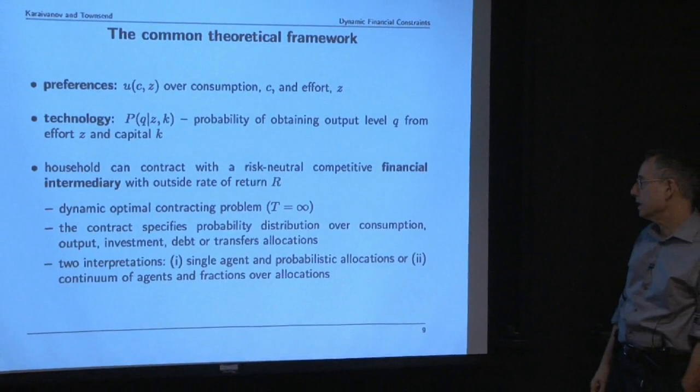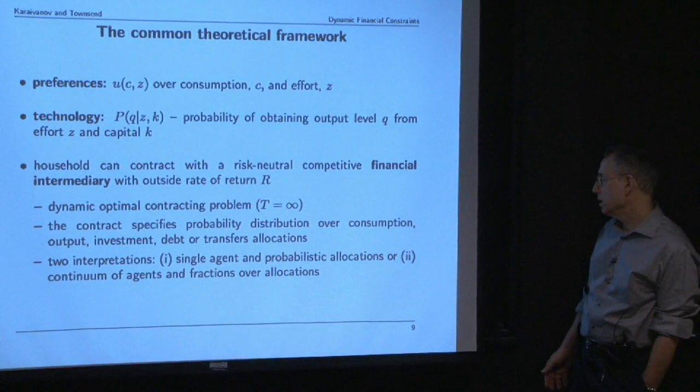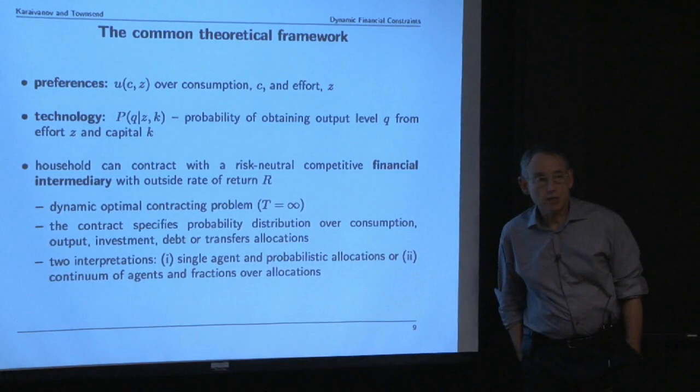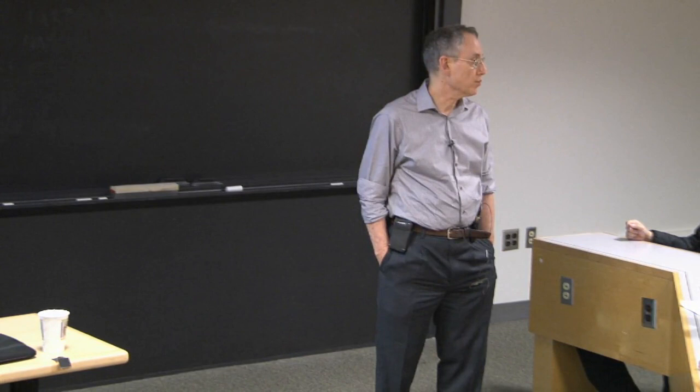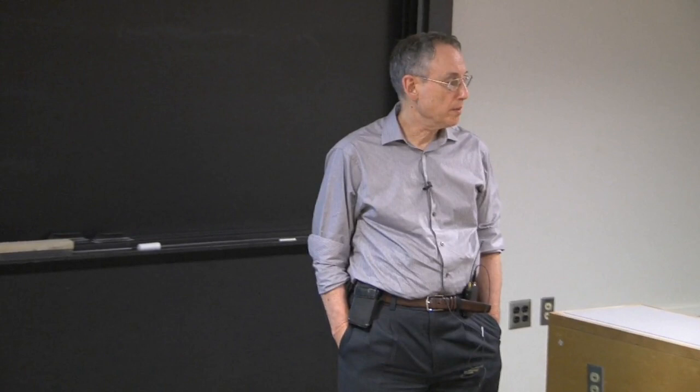You're going to solve this contracting problem for many dates, even potentially over an infinite horizon. You could think about this as a risk-averse household running a business facing a risk-neutral intermediary, as if there are only two people. But a lot of what we do is easier to interpret when there is a continuum of household enterprises, because then we can talk about the fractions of households who took effort, had certain capital, and experienced a certain output—which eliminates uncertainty from the point of view of the intermediary, because all these things average out.